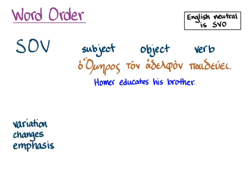Any variation on that neutral word order in Greek changes the emphasis. Greek has the freedom, because of case, to move words around and use that different word order to change the emphasis of the sentence rather than the meaning — which, of course, changed word order would do in English.